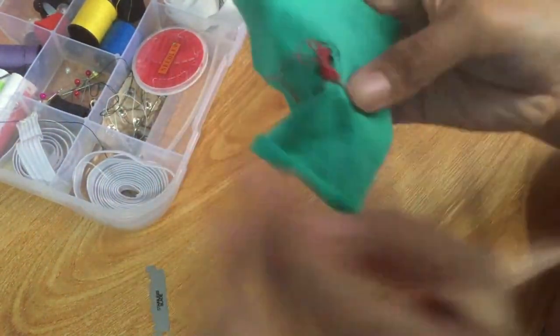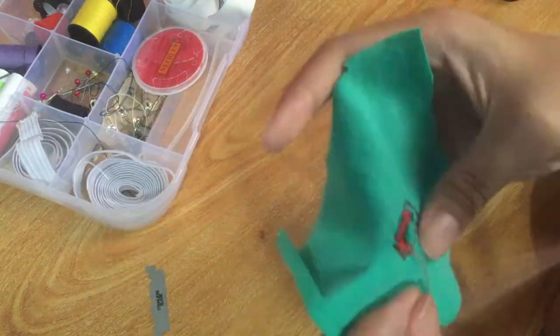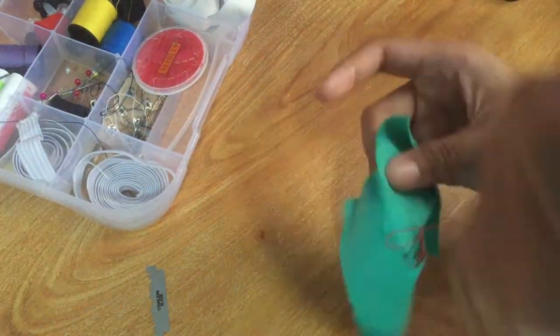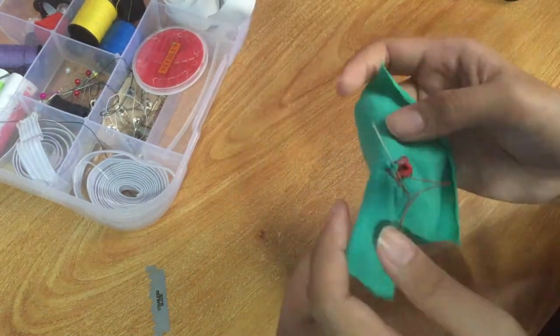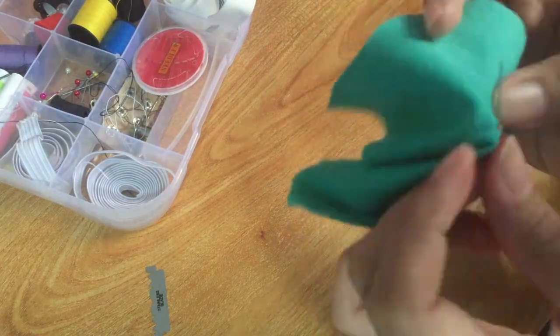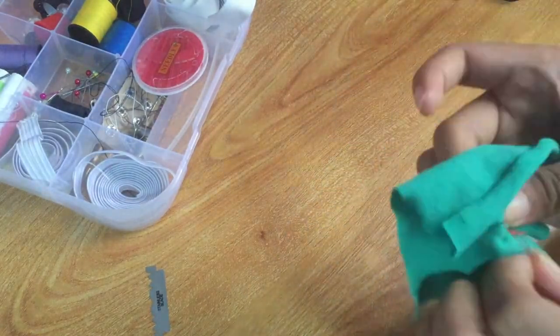When you pull your thread through, there should be a little knot at the top on the cut edge. This is sometimes referred to as the purl stitch and gives a nice edge to the finished buttonhole.